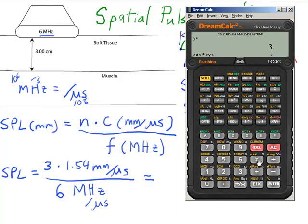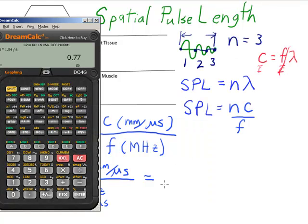Three times 1.54 divided by six equals 0.77 millimeters.